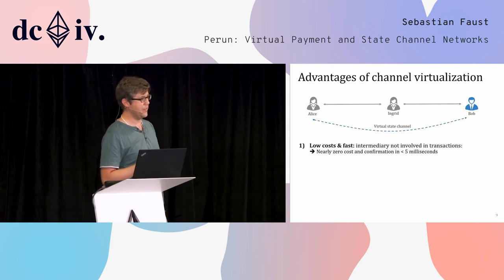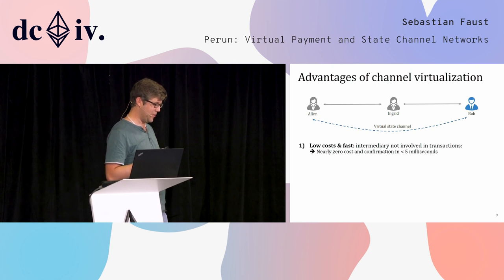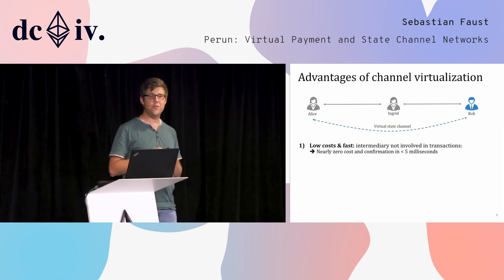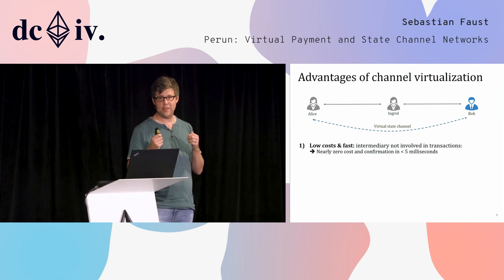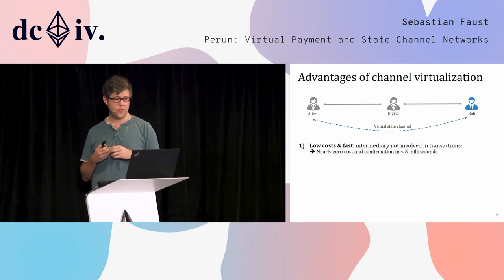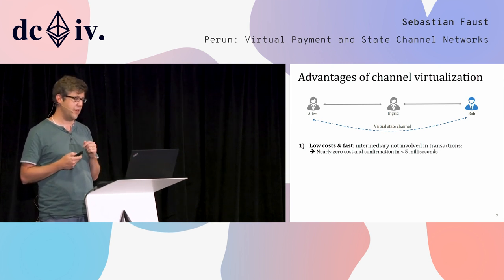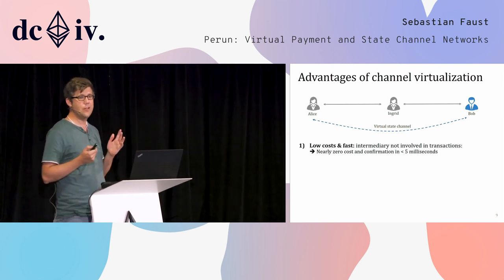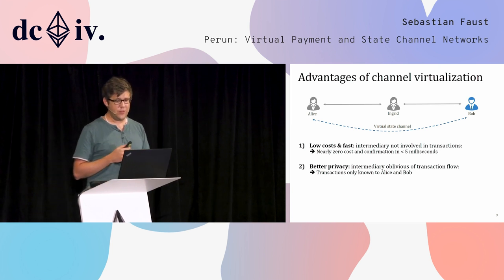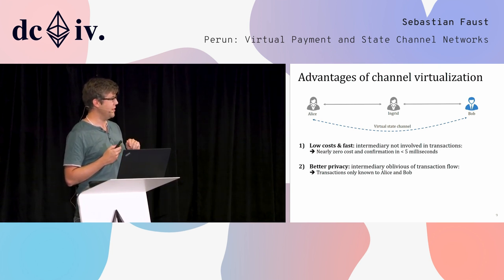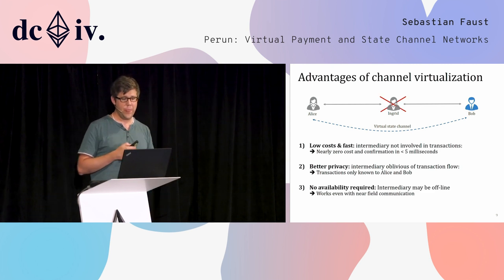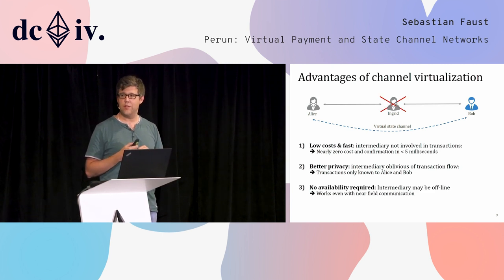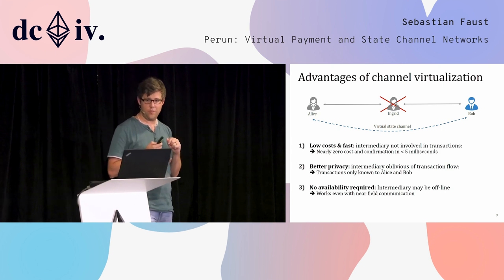What are the advantages of channel virtualization? First, it is low cost: since the intermediary is not involved in the execution of the contract — similar to how the blockchain is not involved in ledger state channel execution — this can be very fast and cheap. The intermediary does not necessarily need to charge fees. We also have better privacy, because the intermediary does not know what happens in the individual state channel, so Alice and Bob can keep their state updates private. Additionally, there is no availability requirement — even if Ingrid goes offline for a while, Alice and Bob can still continue playing chess.